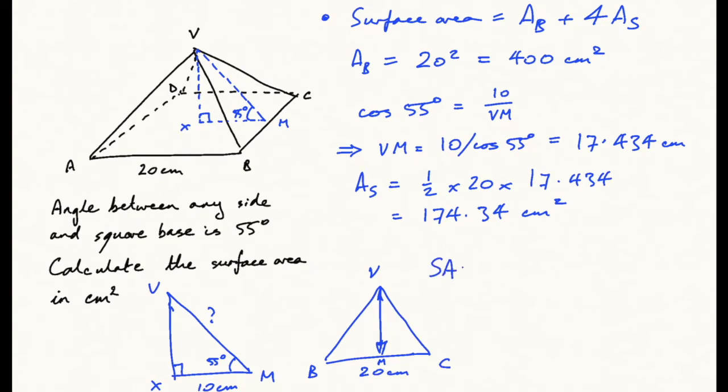If we now go back to the surface area calculation, the surface area is going to be 400 plus 4 times 174.34, and that adds up to 1097.4 centimeters squared. So to two significant figures, that's 1100 centimeters squared.